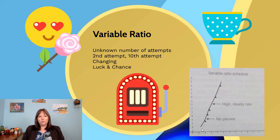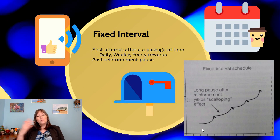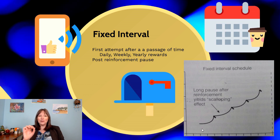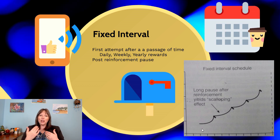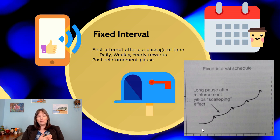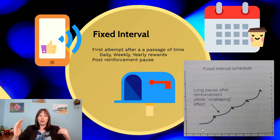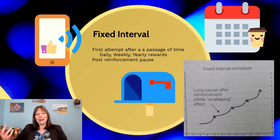Now we move from ratio to interval schedules. Fixed interval and fixed ratio are not the same. Instead of how many times you do a behavior, interval is about how much time has elapsed since the last time you were reinforced. In a fixed interval reinforcement schedule, you only get reinforced once within a certain set amount of time — like a mobile app game that unlocks a special feature once a day after 9 a.m.